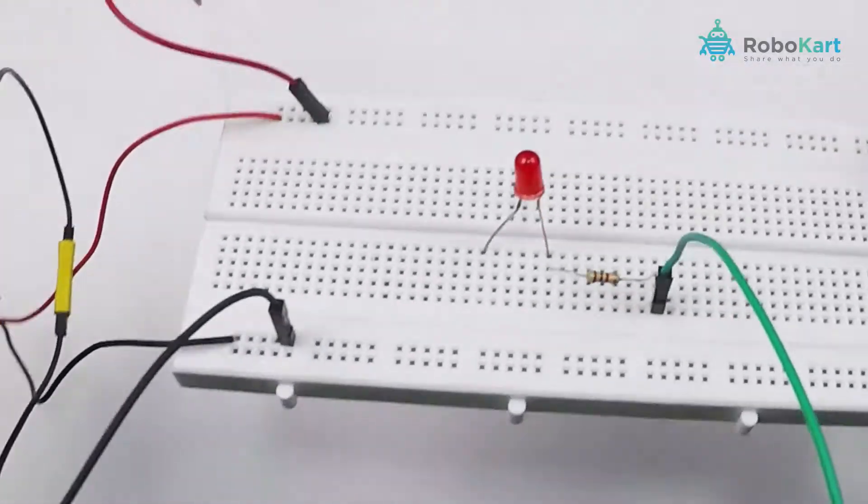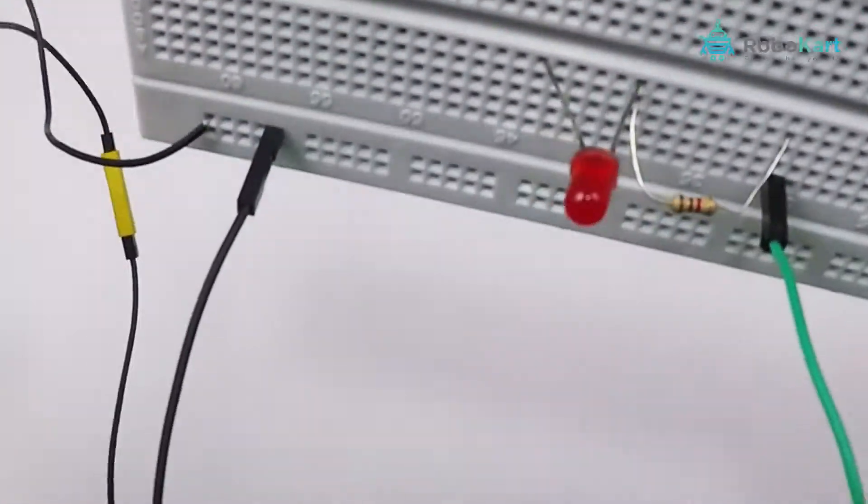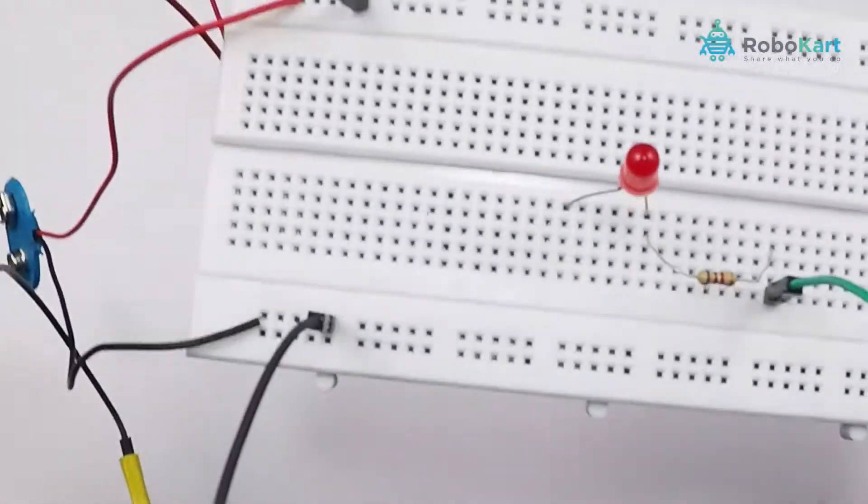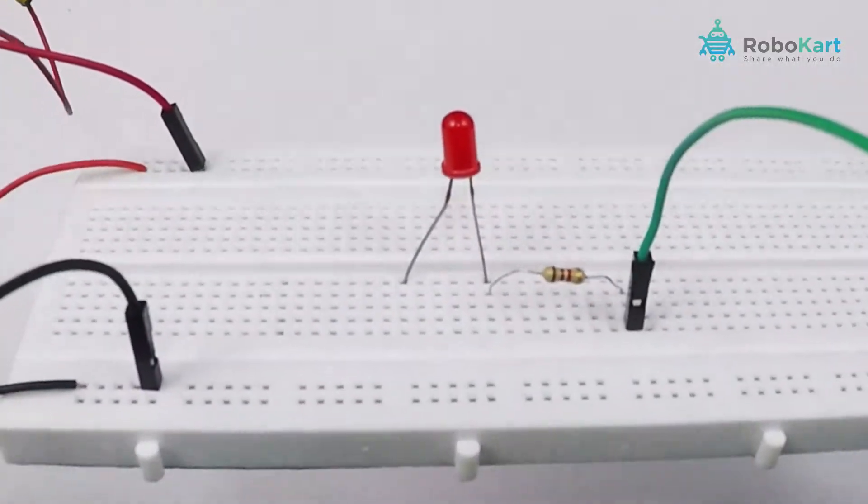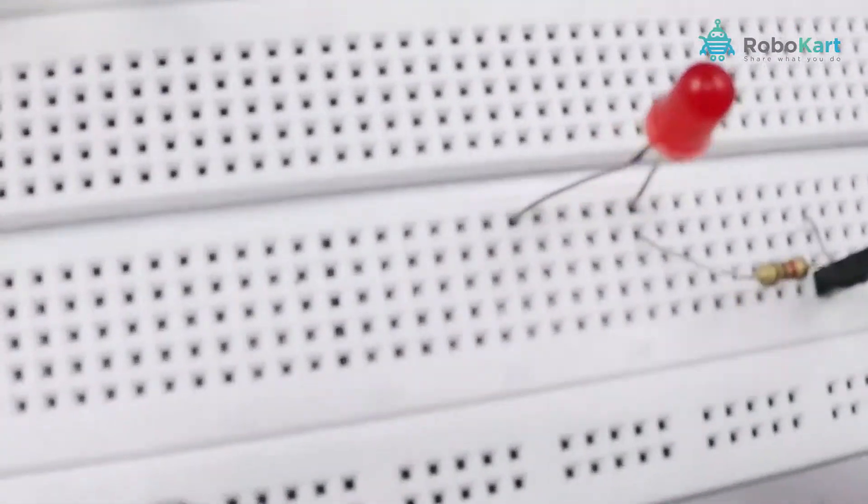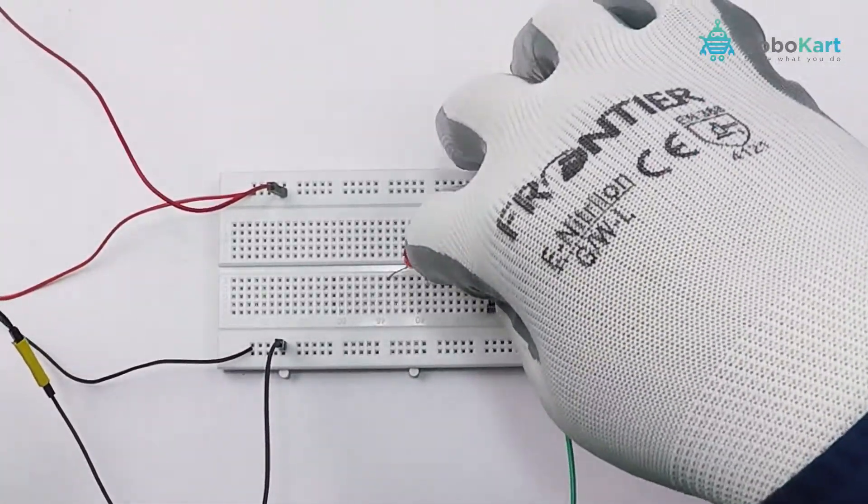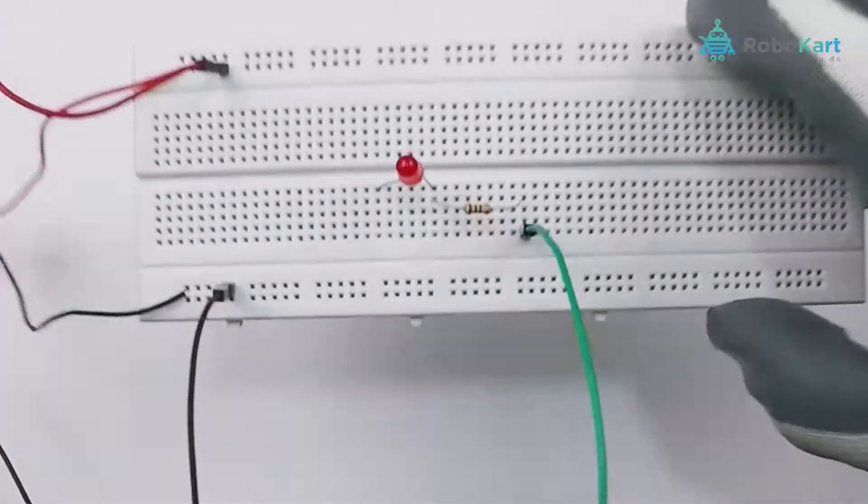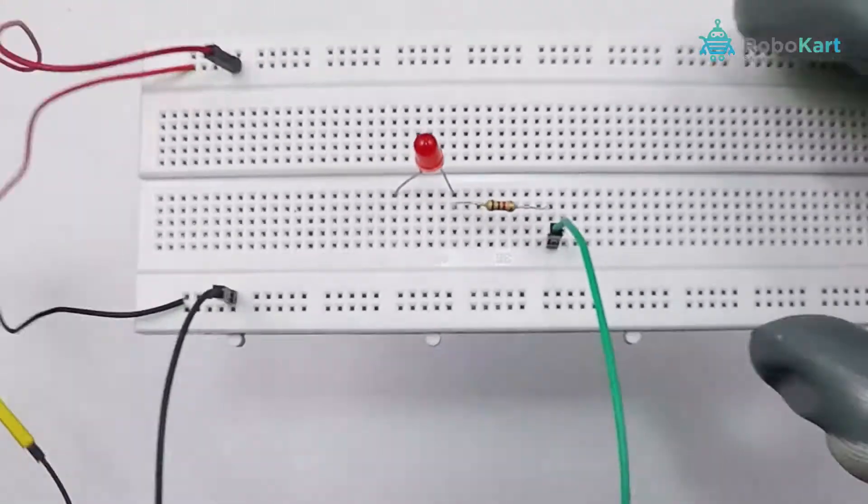Carefully look at the connections and do not make mistakes. Please do as we have shown here. Make sure that you connect the ground terminal of the potentiometer to the ground of the breadboard and the positive terminal of the potentiometer to be connected to the VCC of the breadboard. Make sure you do not interchange.